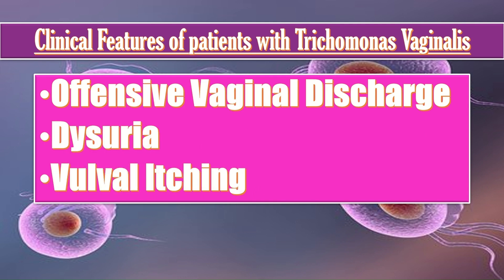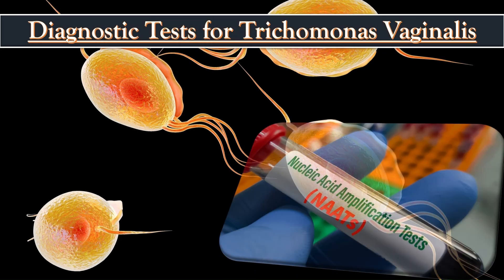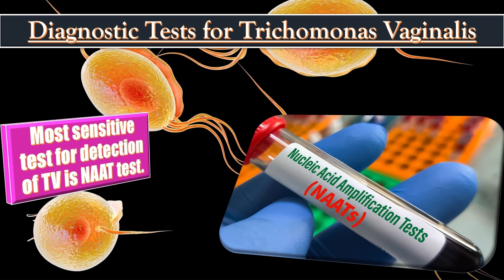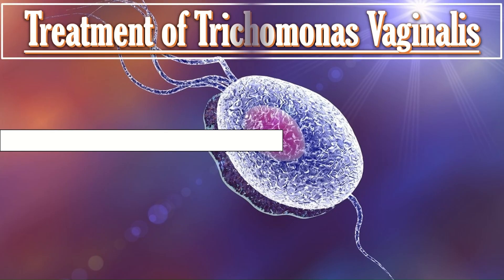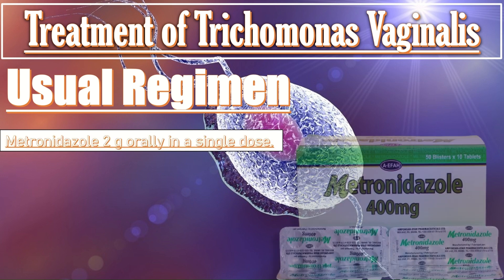Clinical features of trichomonas vaginalis include offensive vaginal discharge, dysuria, and vulval itching. The most sensitive test for detection of trichomonas vaginalis is the NAAT (nucleic acid amplification test). Trichomoniasis testing helps detect this common STD caused by a parasite.